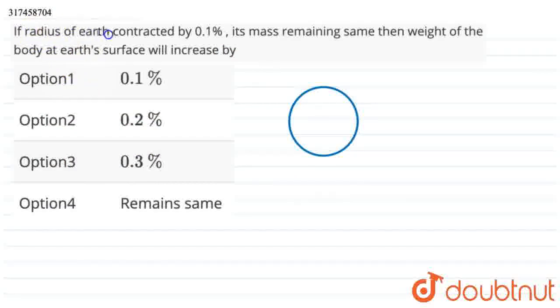What is the question? If radius of Earth contracted by 0.1%, its mass remaining the same, then weight of the body at Earth's surface will increase by. So suppose this is the radius of Earth, its mass is M, so this radius will shrink by 0.1%. So what will happen to weight? Because the acceleration due to gravity depends on the radius of the planet, it will change the weight. How much will it be? Let's see.